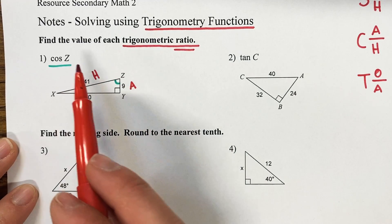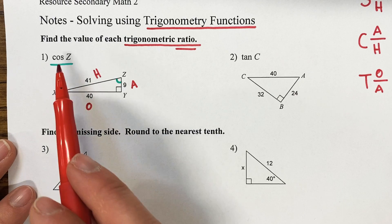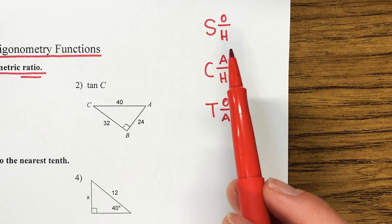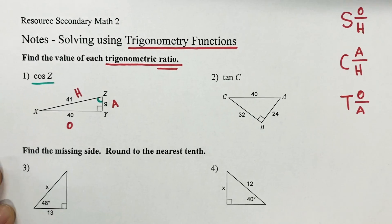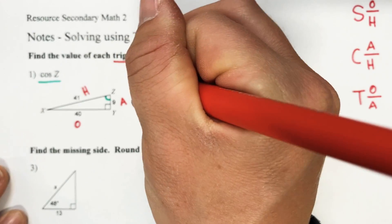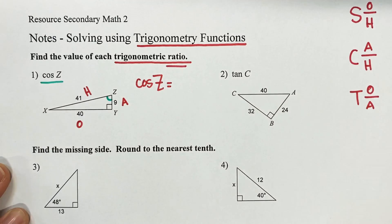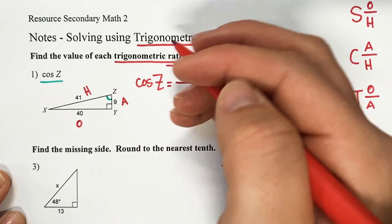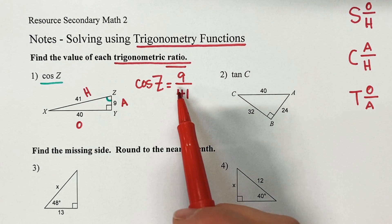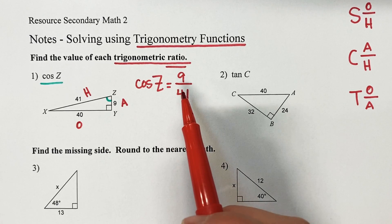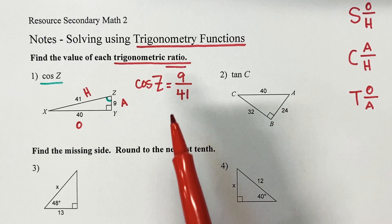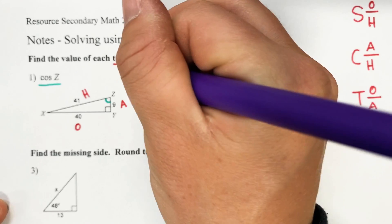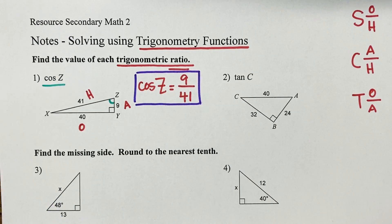Now we can set up this trigonometric ratio using the sides that go with cosine. C for cosine — we need adjacent over hypotenuse. So we write this as cosine of Z equals adjacent 9 over hypotenuse 41. We just need to check if we can reduce this fraction. Is there any number that goes into both 9 and 41? No, there's not. So our final answer is cosine of Z equals 9 over 41.